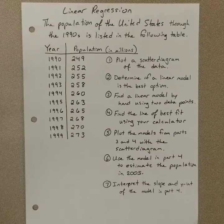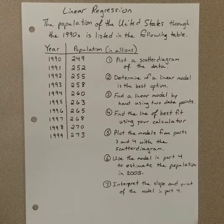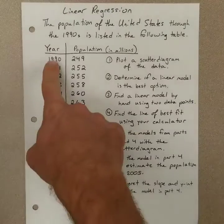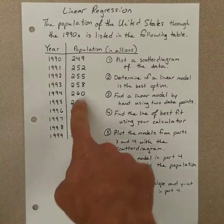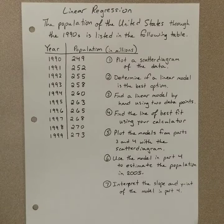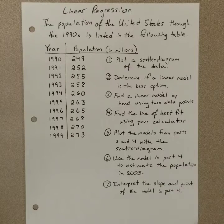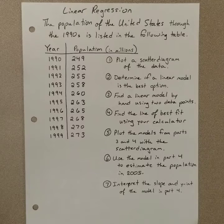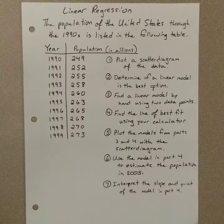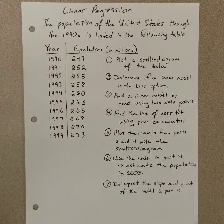So in this example, it says the population of the United States through the 1990s is listed in the following table. And you have your years here, 90 through 99, and the population rounded to the nearest million. I also have on here seven things for us to try to do to practice doing some things in the calculator and learning the features, and also doing this by hand to see a comparison of how this works out.